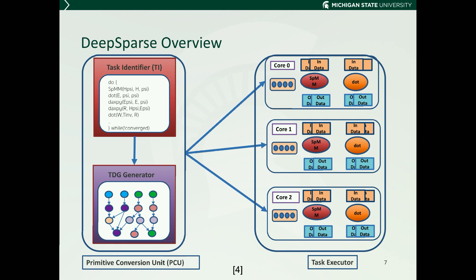The first one is DeepSparse, with two major components: a primitive conversion unit (PCU) and a task executor. The PCU essentially provides a high-level front-end for scientific application development. It reads BLAS-like function calls to create a dependency graph of fine-grained tasks. DeepSparse provides the OpenMP task-based implementation of all computational kernels it supports. The task executor picks each node from the output of PCU one by one, and based on the task information, it spawns an OpenMP task. DeepSparse relies on OpenMP's default task scheduling algorithms for execution of these tasks.